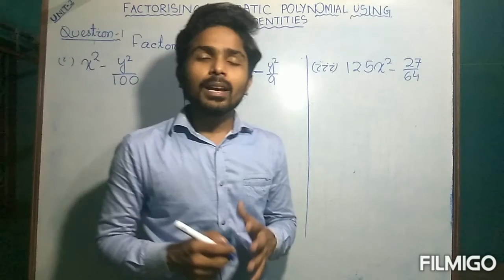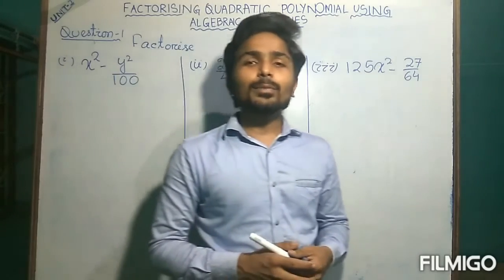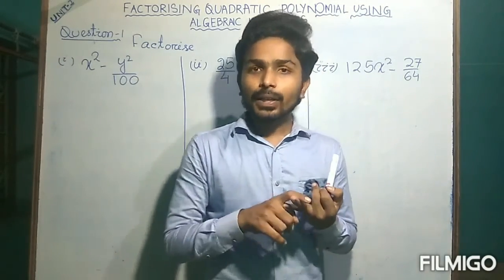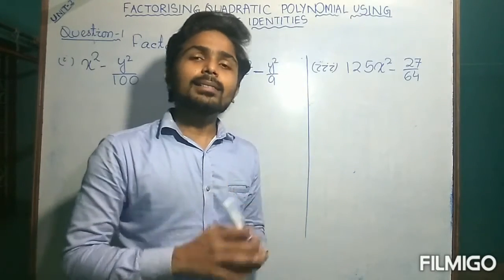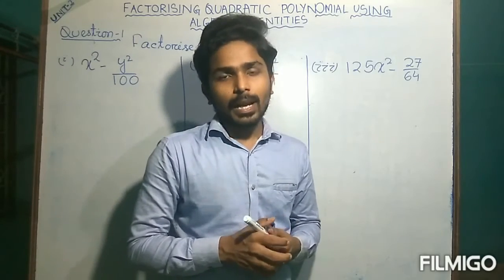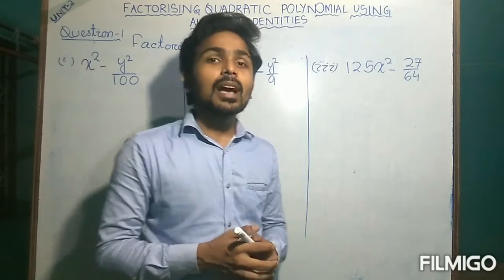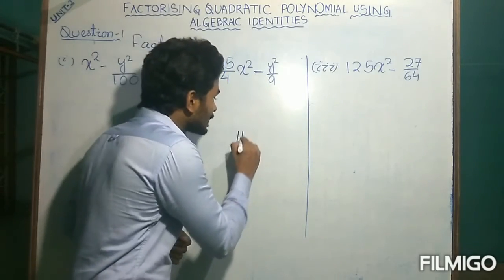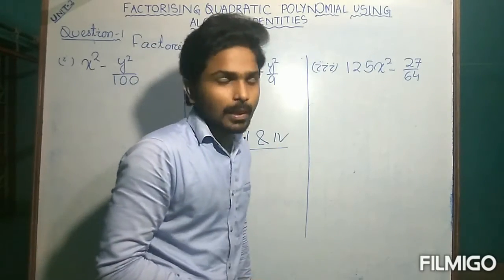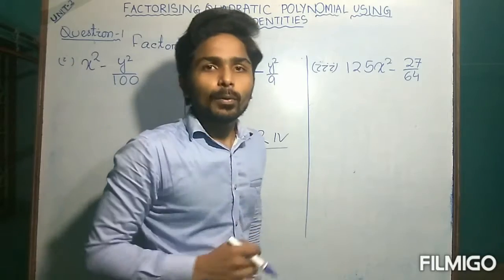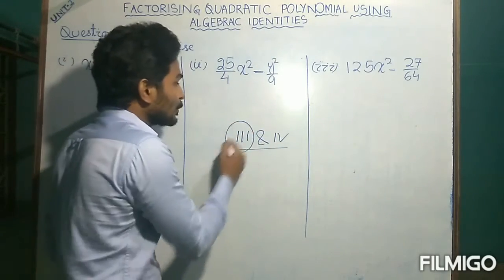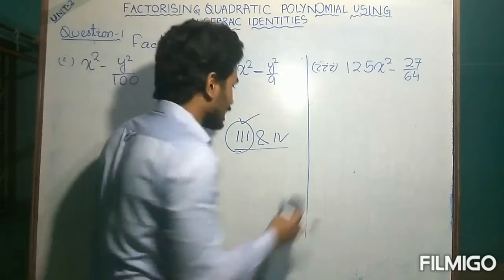Hello students. In the previous class we discussed how identity 1 and identity 2 are used to factorize a quadratic polynomial into the product of two linear polynomials. Today in this class we will discuss how identity 3 and identity 4 are used to factorize such quadratic polynomials. Let's start with the utilization of identity 3.